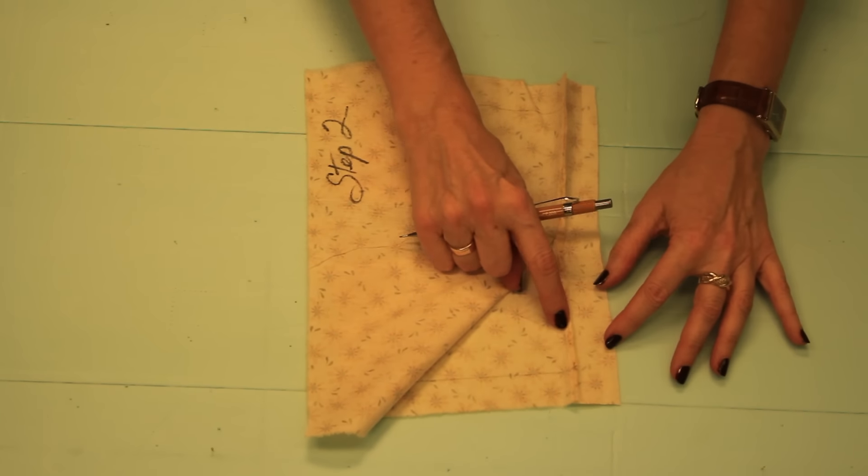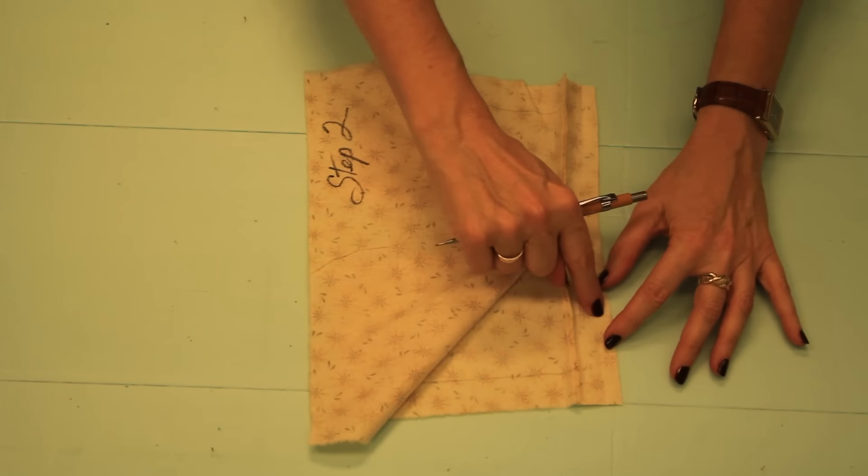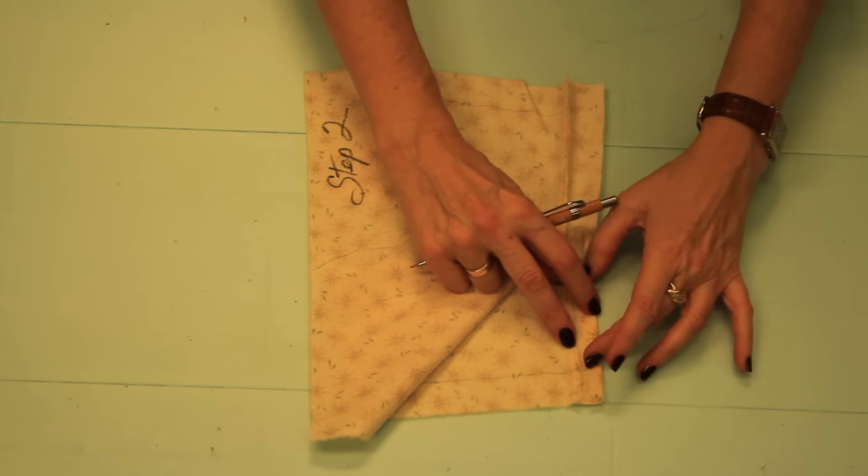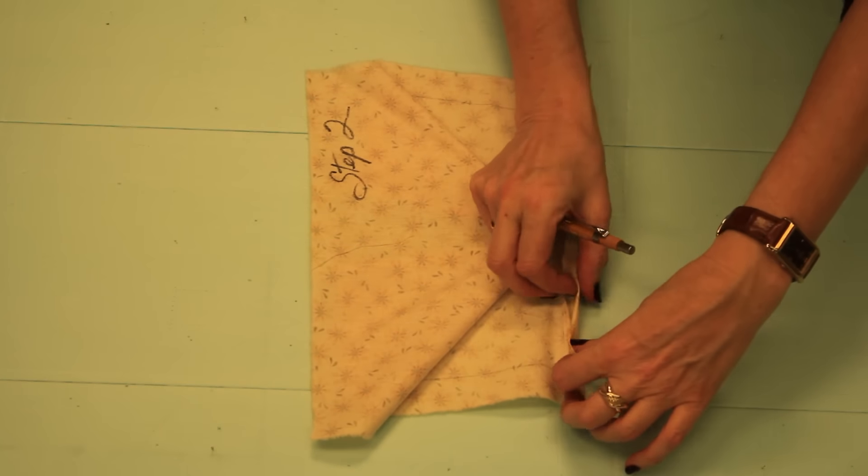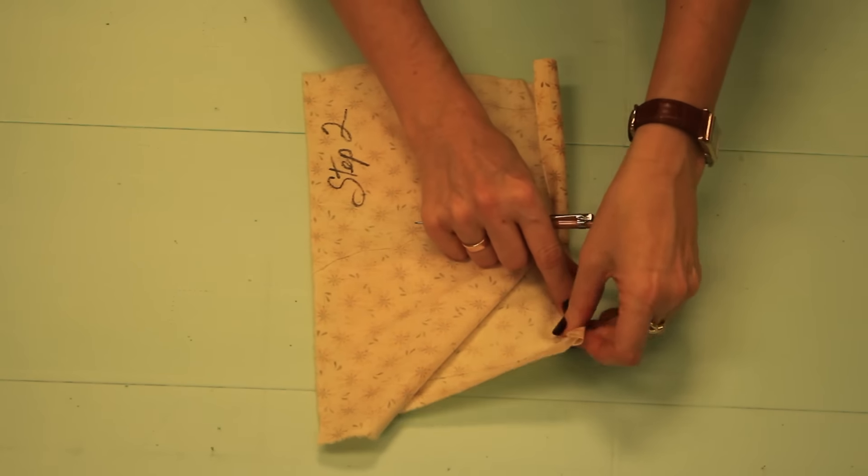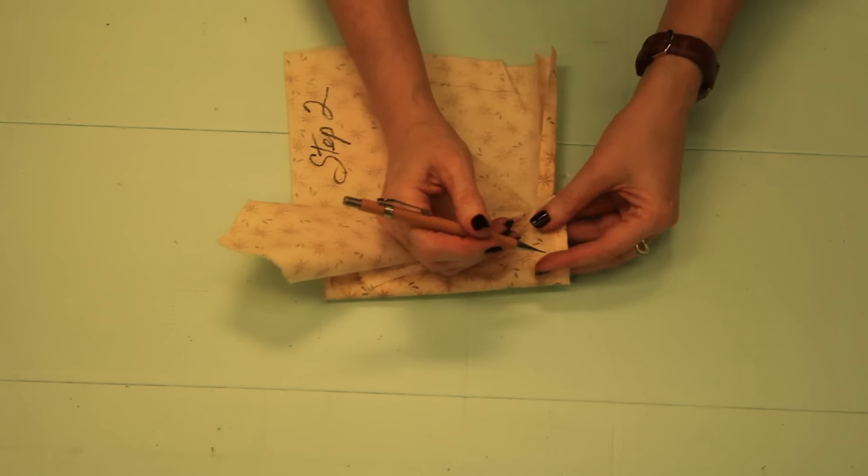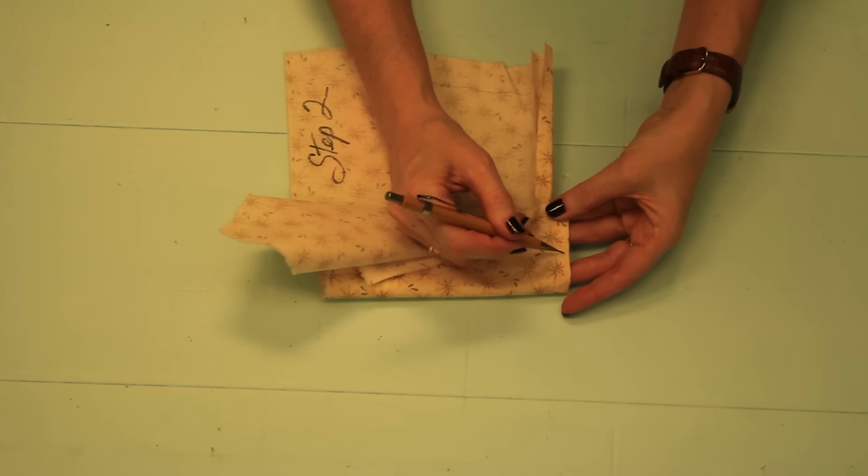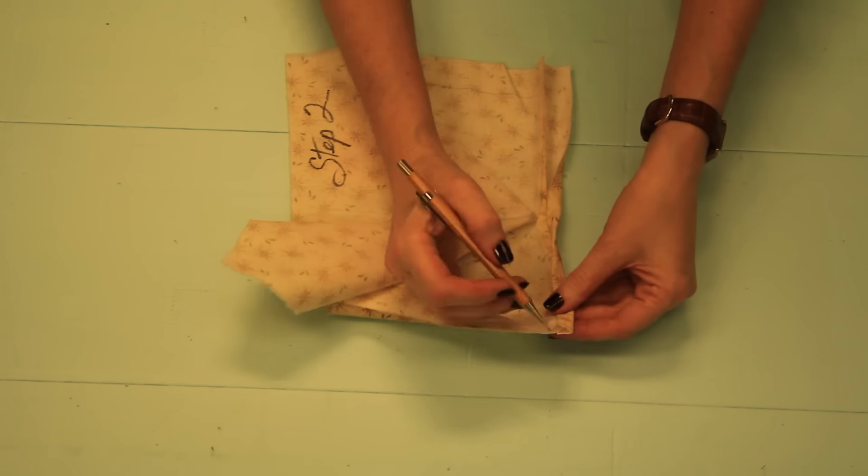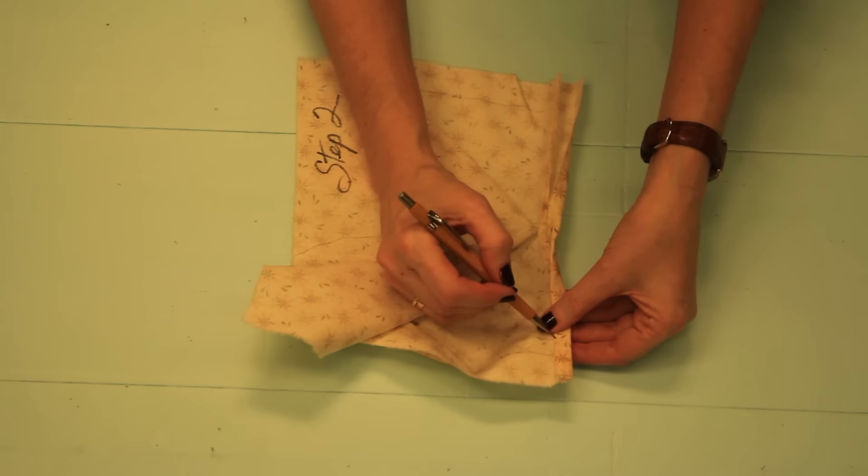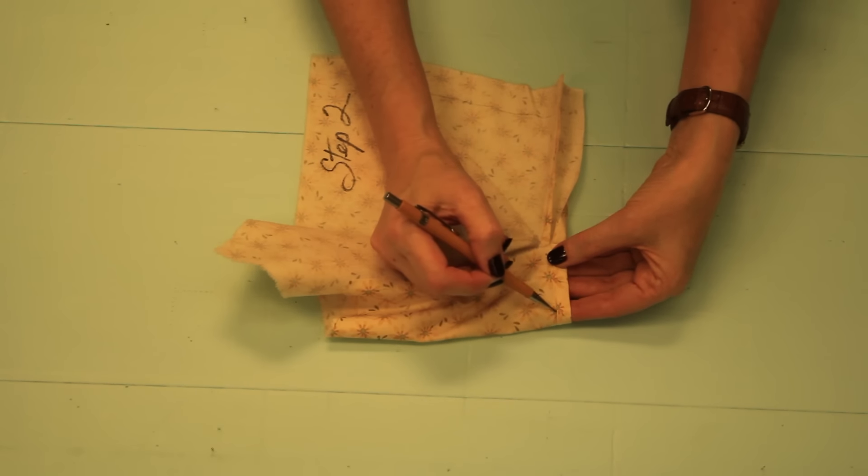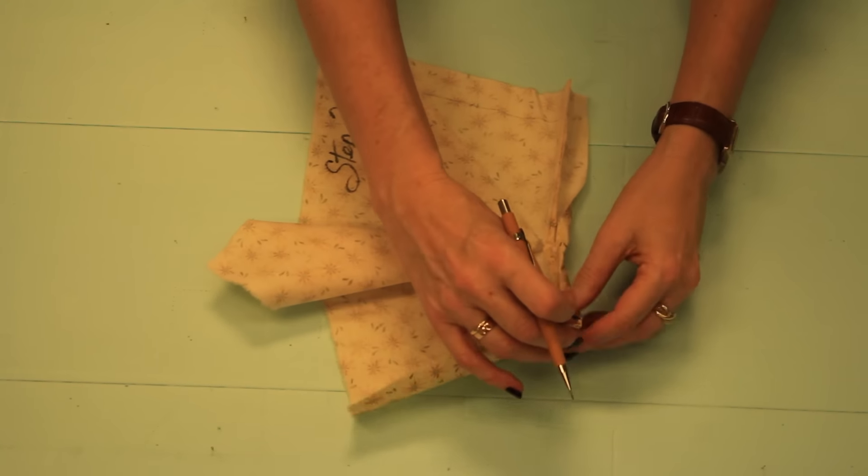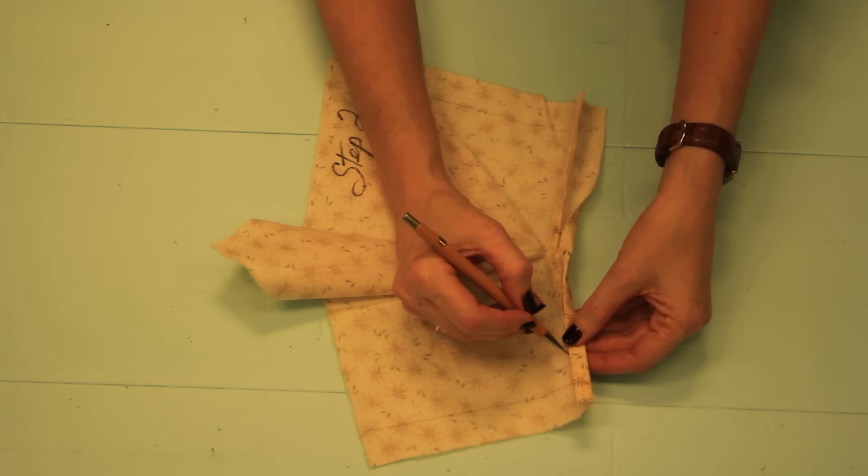Next we want to press the seam allowance toward the placket. Press the placket so it has a clean finished edge here. Fold the placket over one more time so that it creates this quarter inch or maybe three-eighths inch wide continuous placket on the outside. We want to press it over just enough so that when we stitch in the ditch here, we catch just the tiniest lip of fabric here.